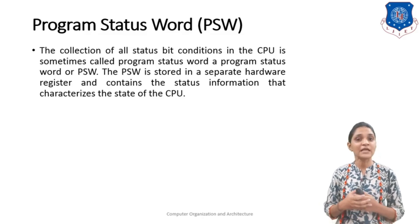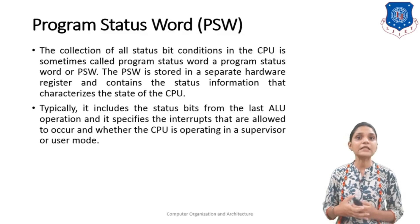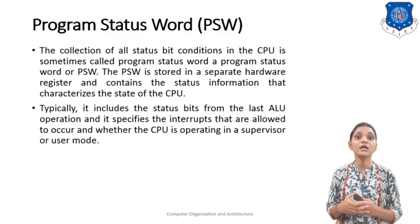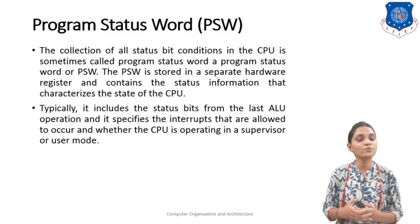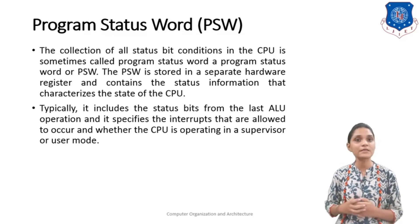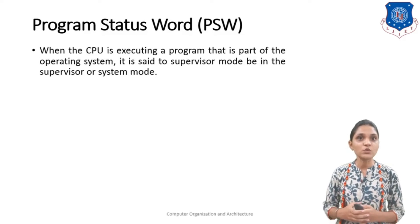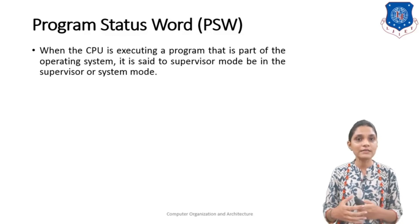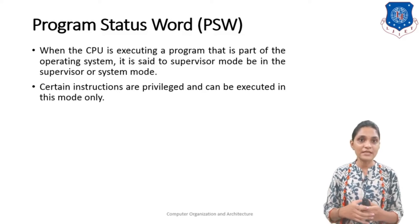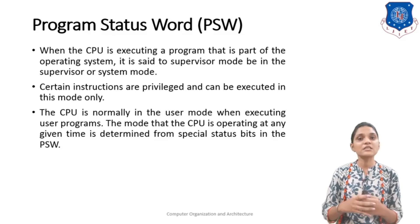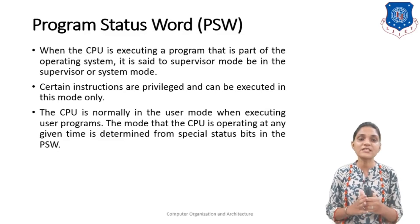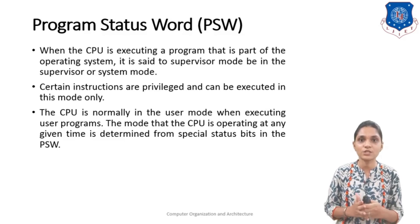The PSW is stored in a separate hardware register and contains status information that characterizes the state of the CPU. Typically it includes the set of status bits from the last ALU operation, it specifies the interrupts that are allowed to occur, and whether the CPU is operating in supervisor mode or user mode. When a CPU is executing programs that are part of the operating system it is known as being in supervisor mode or system mode. Certain instructions are privileged and can only be executed in this mode. The mode the CPU is operating in at any given time is determined from a special status bit in the PSW.